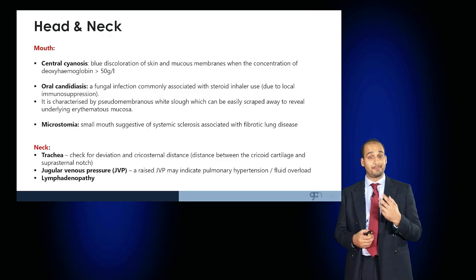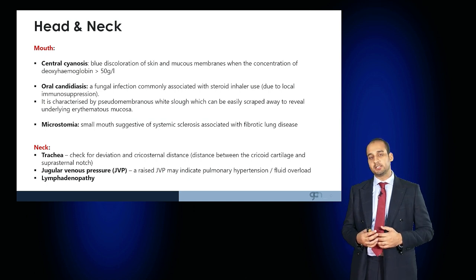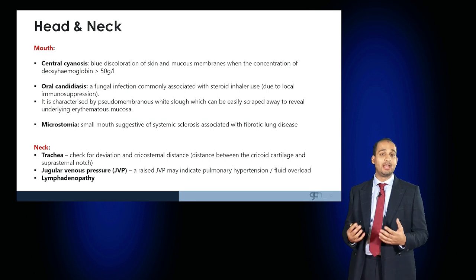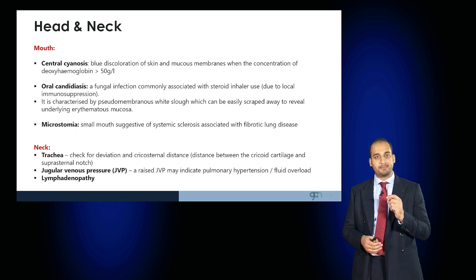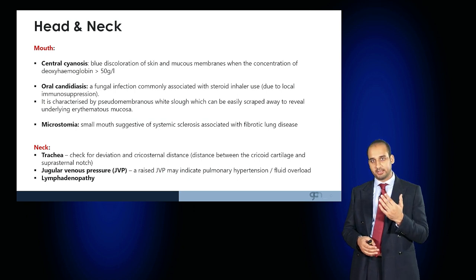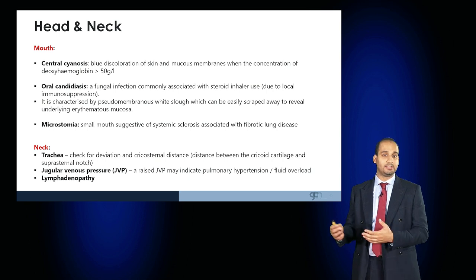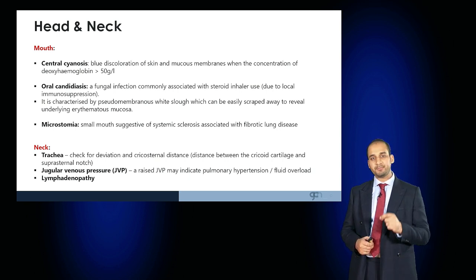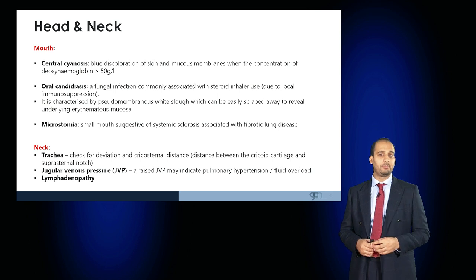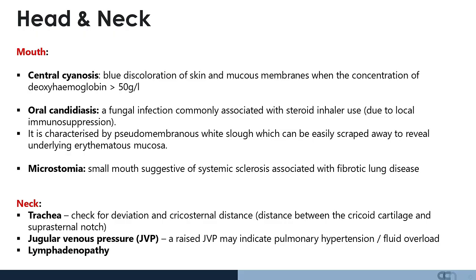Look for signs of central cyanosis — blue discolouration of the skin and mucous membranes occurs when the concentration of deoxyhaemoglobin rises. In the mouth look for signs of oral candidiasis, a fungal infection that can occur if the patient is regularly taking a steroid inhaler or is immunosuppressed. It is characterised by a pseudomembranous white slough that can be easily scraped away to reveal the underlying erythematous mucosa. Microstomia — a small mouth — may suggest systemic sclerosis, which can be associated with fibrotic lung disease.